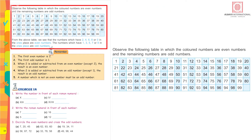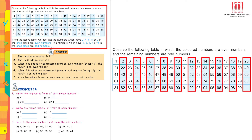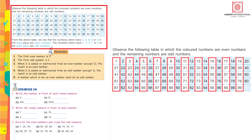Observe the following table in which the colored numbers are even numbers and the remaining numbers are odd numbers. The numbers which are colored blue can be arranged in groups of 2, so they are even numbers. The numbers written in the white strip are odd numbers.